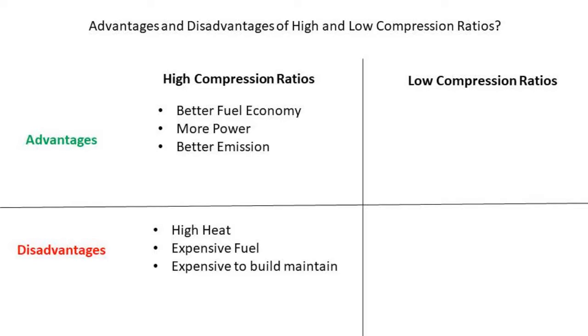Higher compression ratio disadvantages are higher heat. The more you compress a gas, the higher the heat gets. For non-diesel engines, you need expensive fuel that is higher octane and higher grade. This is to avoid engine knocking or the detonation of fuel mixture before the spark. And they are generally more expensive and complicated to build and maintain.